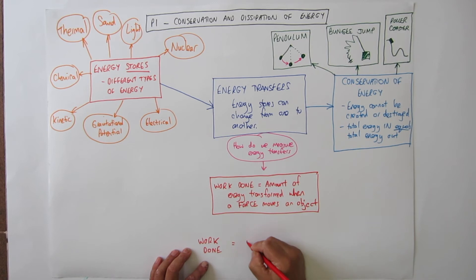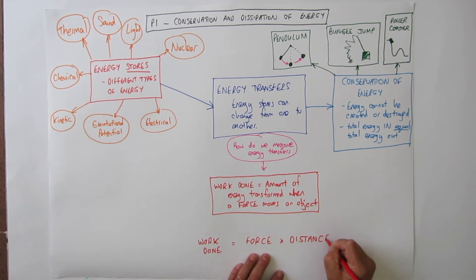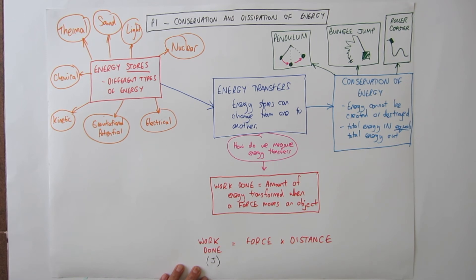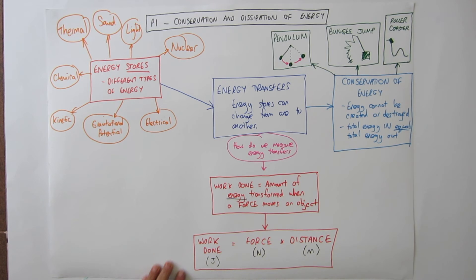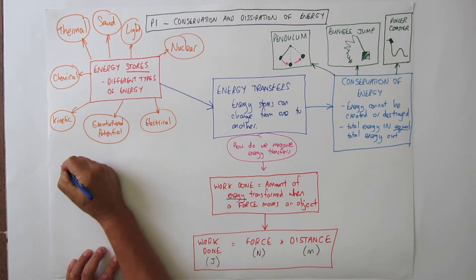Work done is literally the amount of energy transformed when a force moves an object. We've got an equation for calculating work done. And don't forget the units. Work done is measured in joules. Don't forget work done is the amount of energy transferred. So it's measured in joules. Force is obviously in newtons and distance in meters. All standard units.